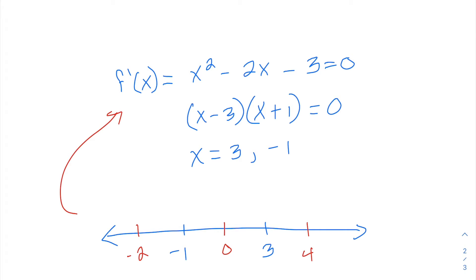When we plug in negative 2, we get 4 plus 4 which is 8, minus 3 is 5 — that's a positive value, meaning a positive slope. When we plug in 0, we get negative 3 — a negative value, meaning a negative slope between negative 1 and 3. And when we plug in 4, we get 16 minus 8 is 8, minus 3 is 5 — another positive value, positive slope. So negative 1 is a local max and positive 3 is a local min.